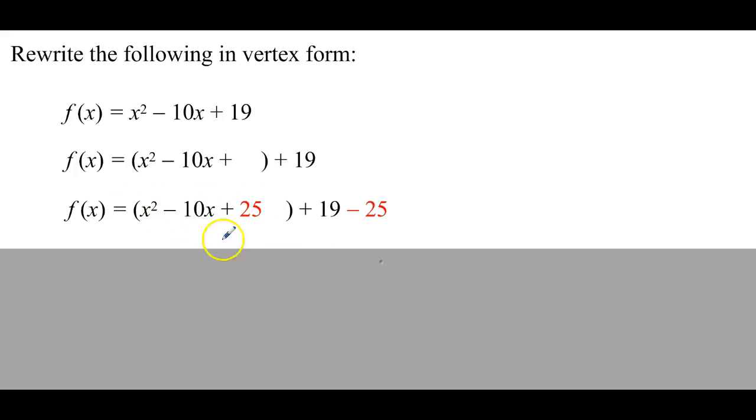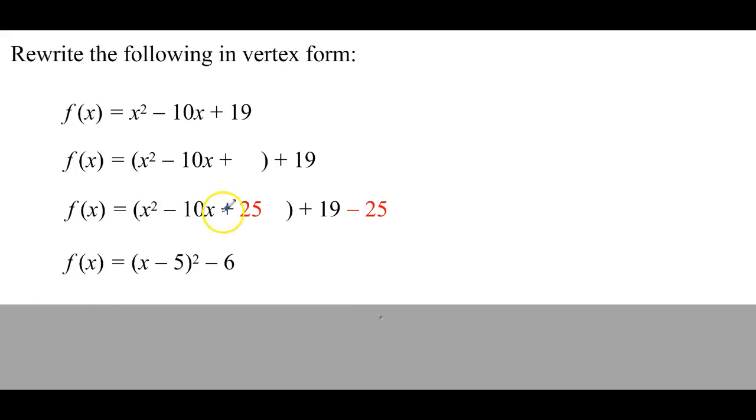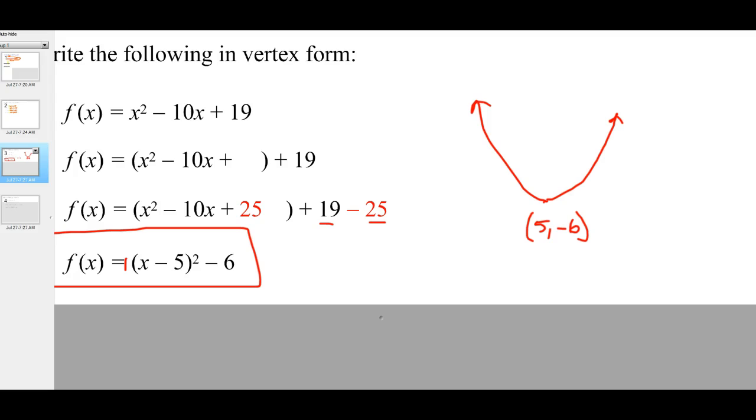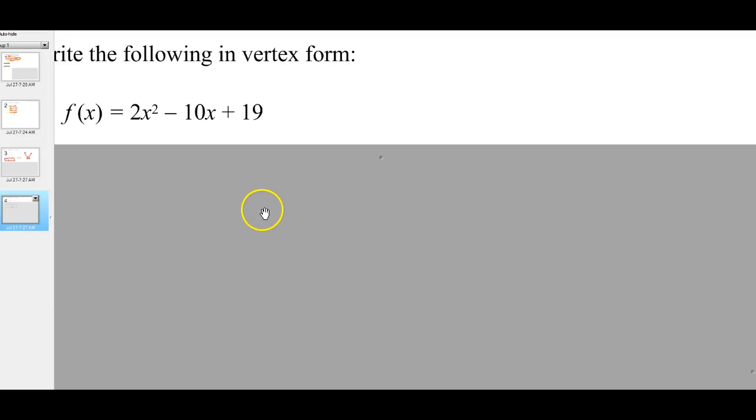Now I'm going to take this quadratic here and write it in perfect square form. So x squared minus 10x plus 25 is really x minus 5, that whole quantity squared. And then I simplify by adding those guys, 19 and negative 25 is negative 6. There we go. That's my answer in vertex form. And now I'm ready to graph. So the vertex is going to be positive 5, negative 6. And the vertical stretch is positive 1. And so this is the mother function.